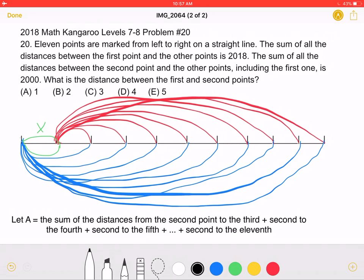Let's start with the statement that the sum of all the distances between the second point and the other points, including the first one, is 2000.